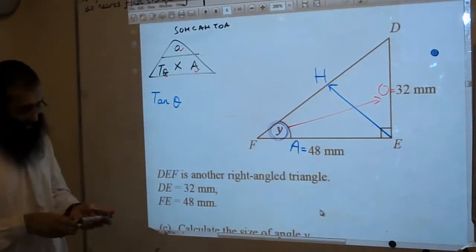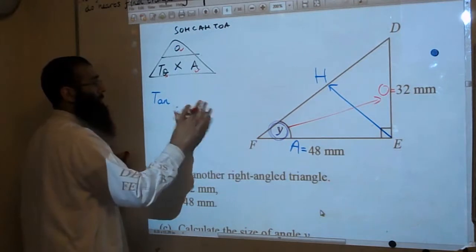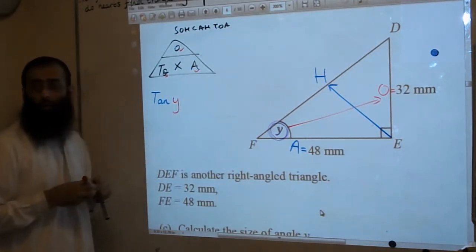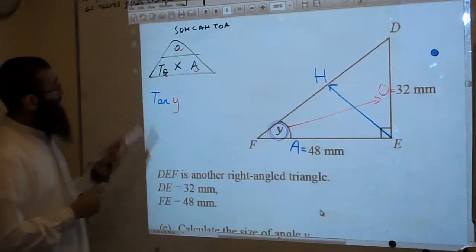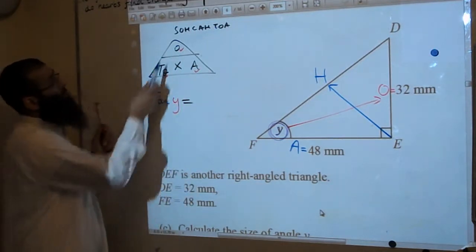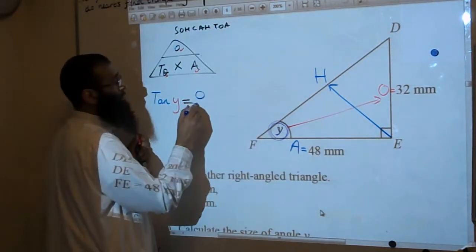Okay, what can I replace the angle with? I can replace the angle with, in the context of my question, the angle is what? What's the angle? Y. Tan of Y is equal to the O divided by the A. The O divided by the A. I'm just going to write down the formula for the moment.